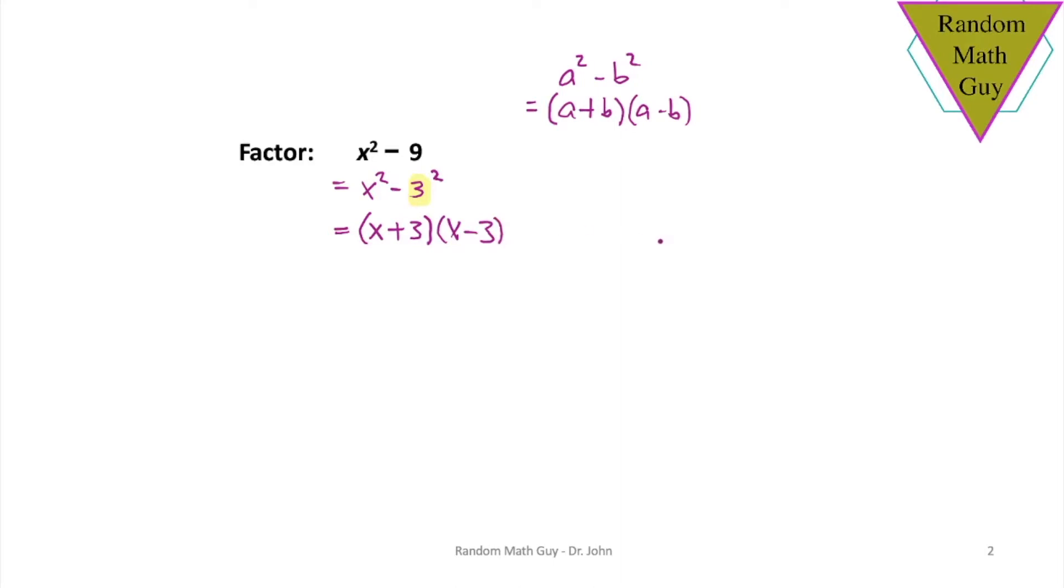Okay, so the next few examples will be similar in nature. Again, is 4 a perfect square? Absolutely, it's 2 squared. I'm keeping the numbers small in these first examples just so that you don't have too much issues with the arithmetic. So you would write x plus 2, x minus 2.